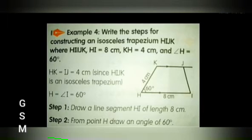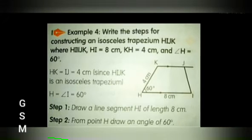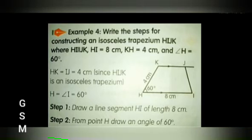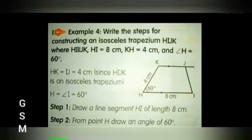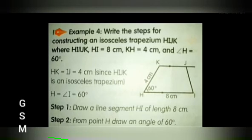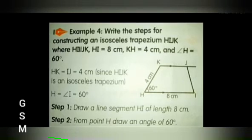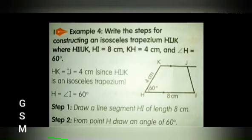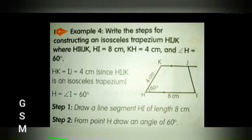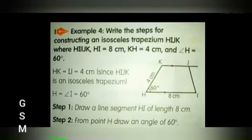HI is parallel to JK, and HI equals 8 cm, KH equals 4 cm, and angle H equals 60 degrees. Since HIJK is an isosceles trapezium, HK equals IJ equals 4 cm, and angle H equals angle I equals 60 degrees. Step 1: Draw a line segment HI of length 8 cm.